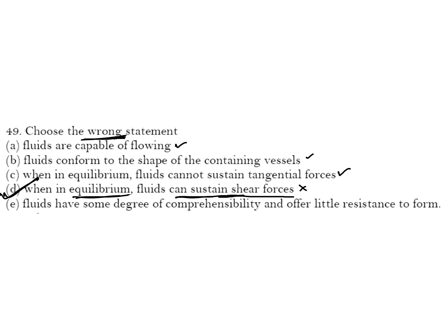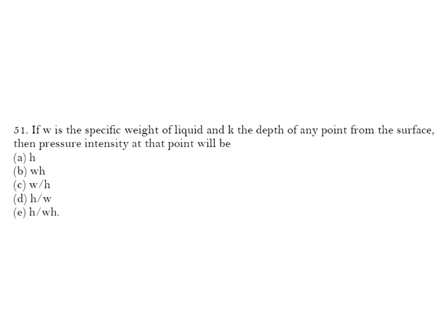Fluids have some degree of compressibility and offer little resistance to form — this is also correct. Next question: if W is the specific weight of liquid and H is the depth of any point from the surface, then pressure intensity at that point P = ρgH, where ρg is specific weight (w), so P = wH. B is your correct answer.